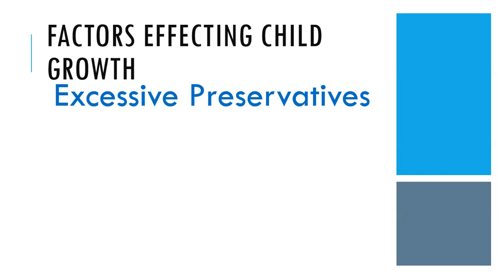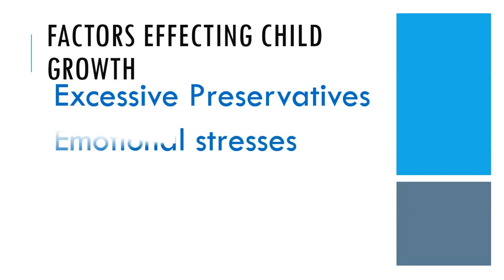Children who consume unhealthy food don't grow properly. Even if their physical growth occurs, they don't become strong. Emotional stress is another factor — when a child is emotionally stressed, they do not experience adequate physical or mental growth.